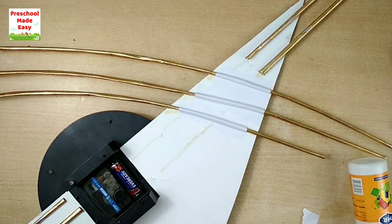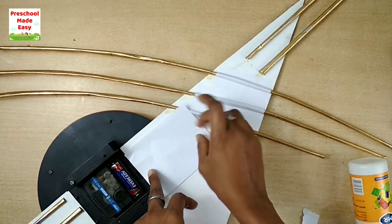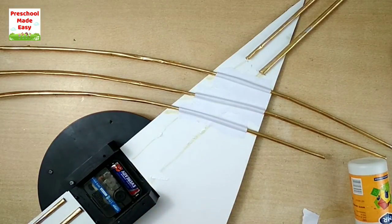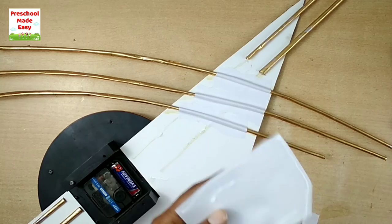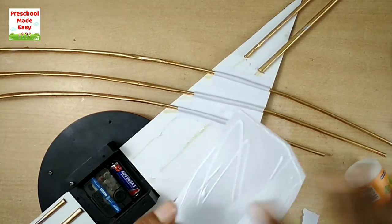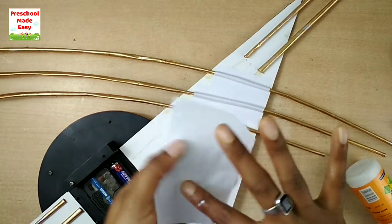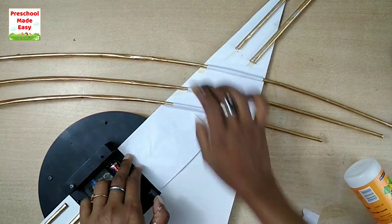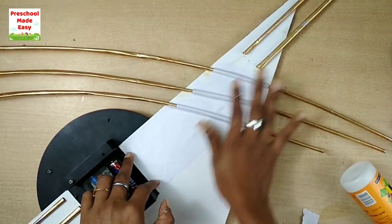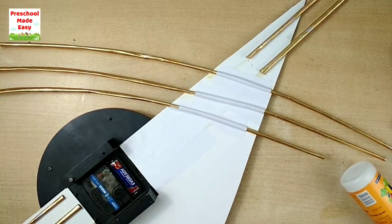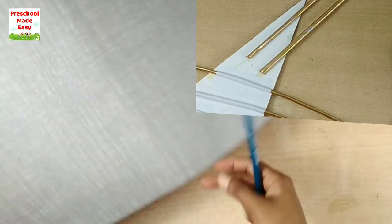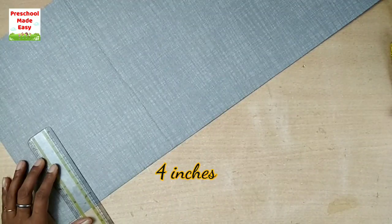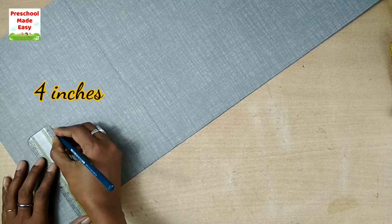Because these blue lines are looking bad, so I will stick a paper here also. Now this is looking good so far. I'm making triangle shapes with this gray paper.